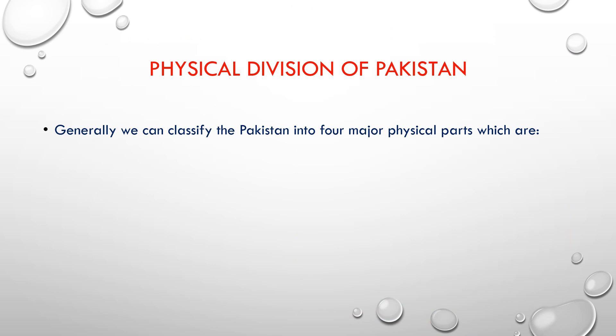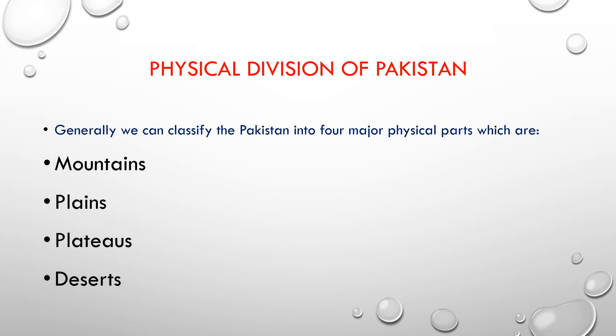Now, the physical divisions of Pakistan. Generally, we can classify Pakistan into four major physical parts: mountains, plains, plateaus, and deserts. Our main focus will be on mountains.